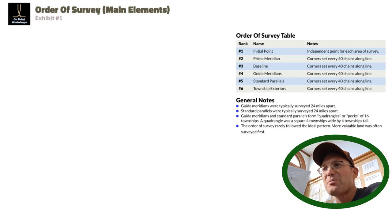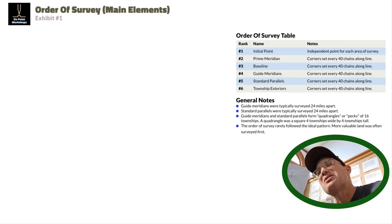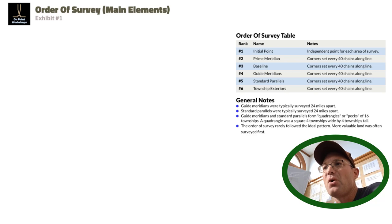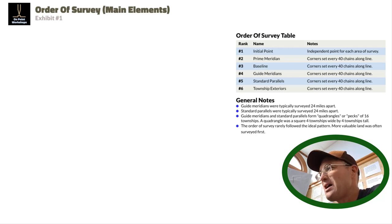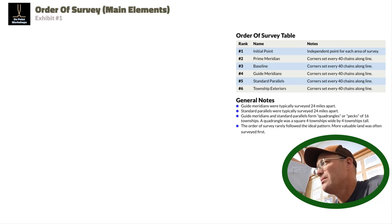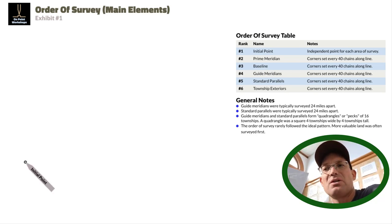The system starts each survey in a particular area, typically a state but not always, with what was called an initial point. In my part of California, our initial point is on top of Mount Diablo in the Bay Area. California is somewhat unique because it's a large state. We have three initial points: one in San Bernardino and one in the very northwestern part of the state. Our initial point is in central California on top of Mount Diablo, and it runs over into Nevada, so our initial point is also the initial point for Nevada. That's how things start. They pick an initial point, which gets a monument.